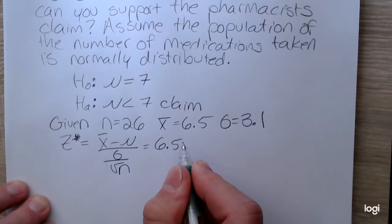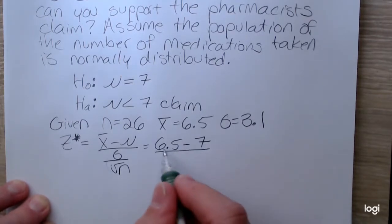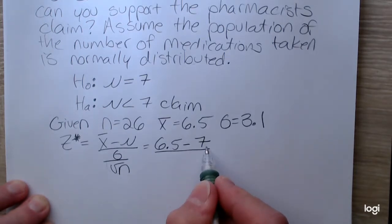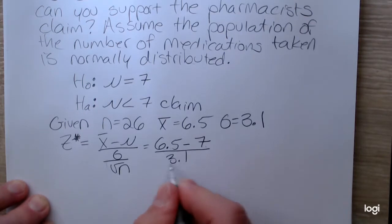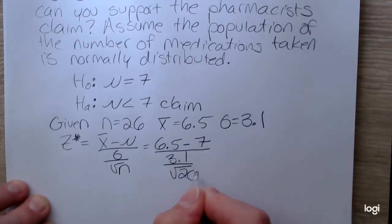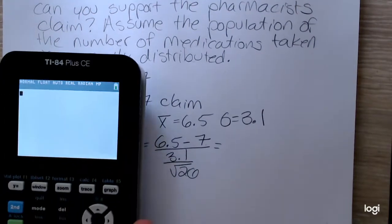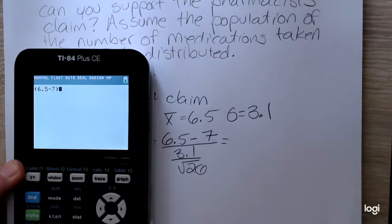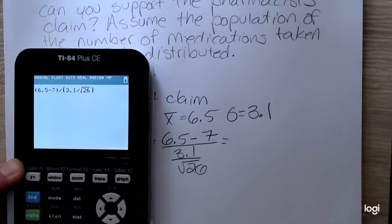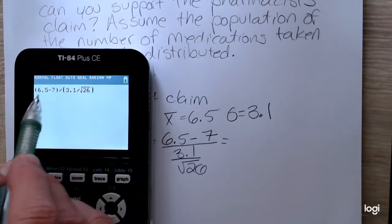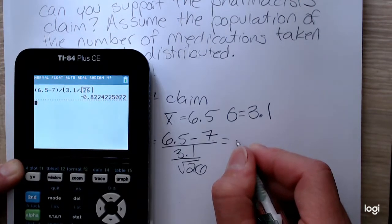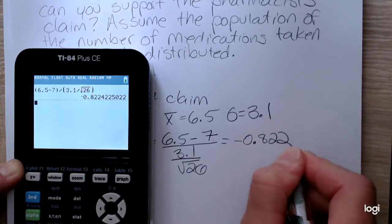And plugging into the formula, I can see that I expect this standardized test statistic to be negative because what we observed is less than what is hypothesized. Alright, so 3.1 divided by the square root of 26. I'm turning on my calculator. And again, you want to use parentheses around the numerator expression and the denominator expression just to make sure your calculator observes the correct order of operations. Okay, so the standardized test statistic is negative 0.822, rounding to three decimal places.